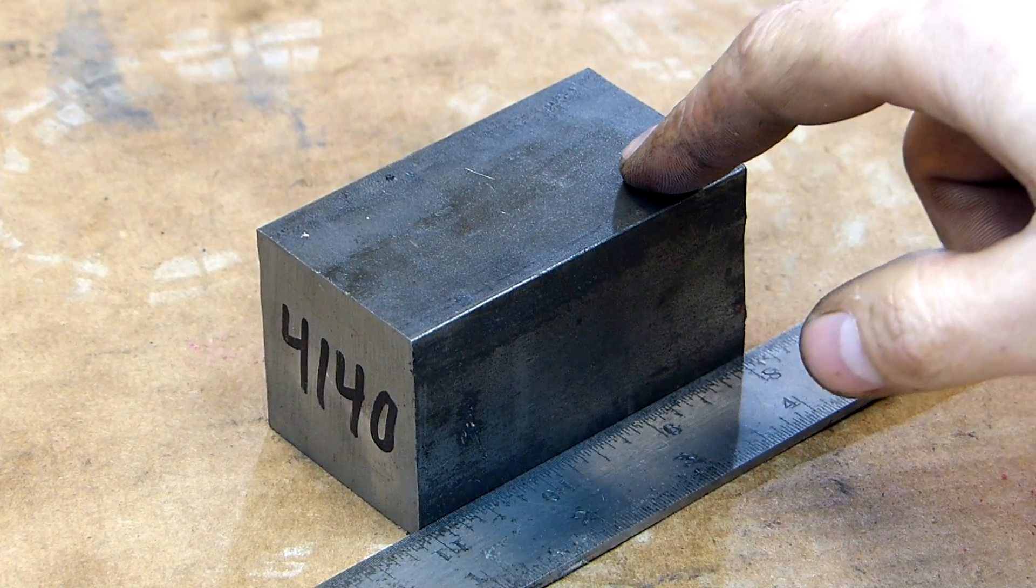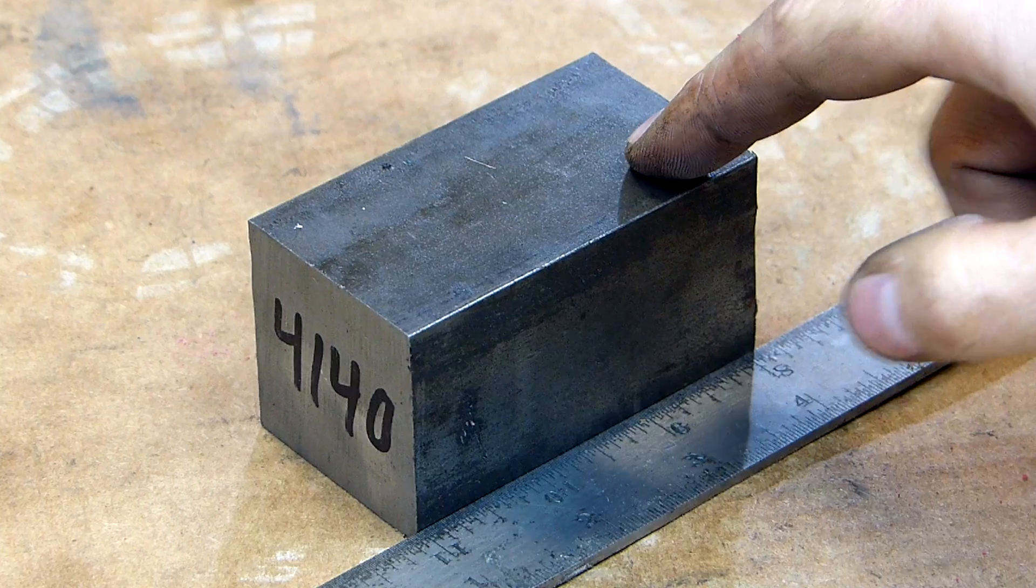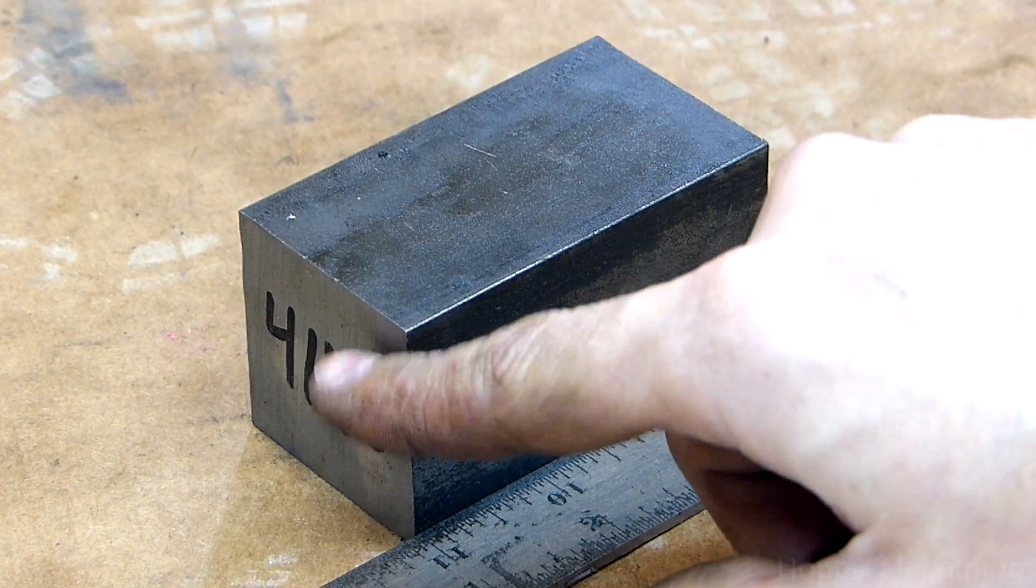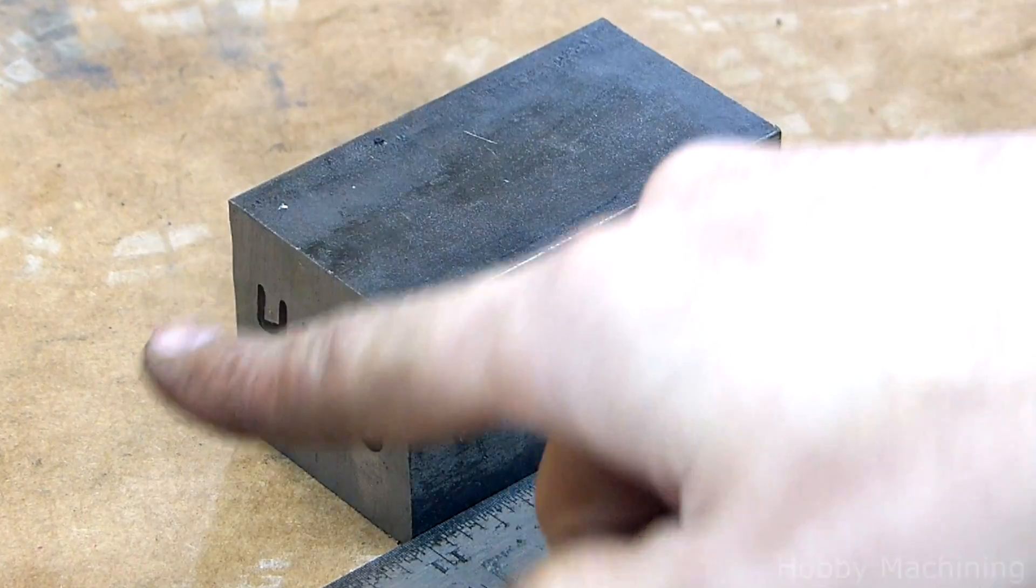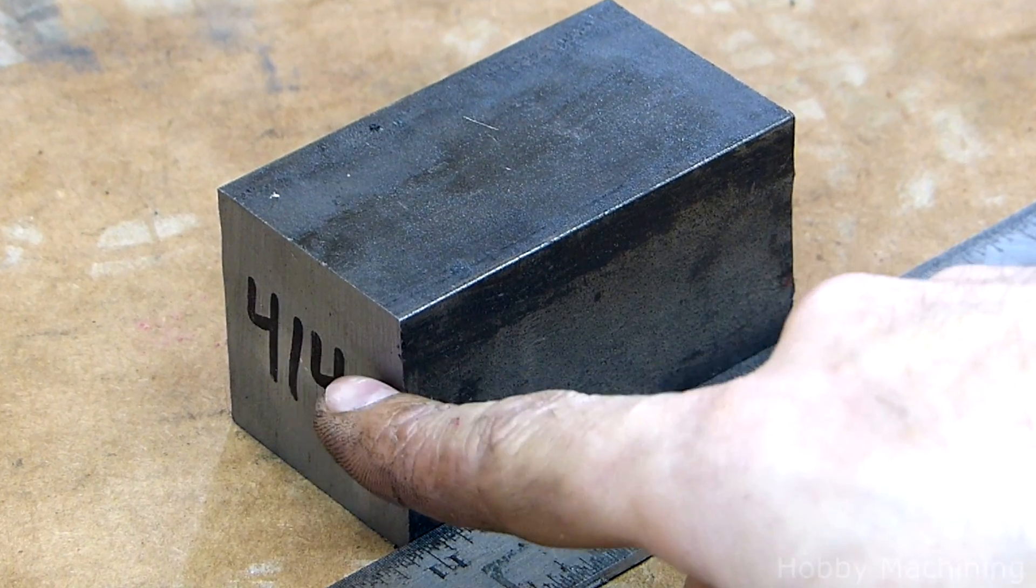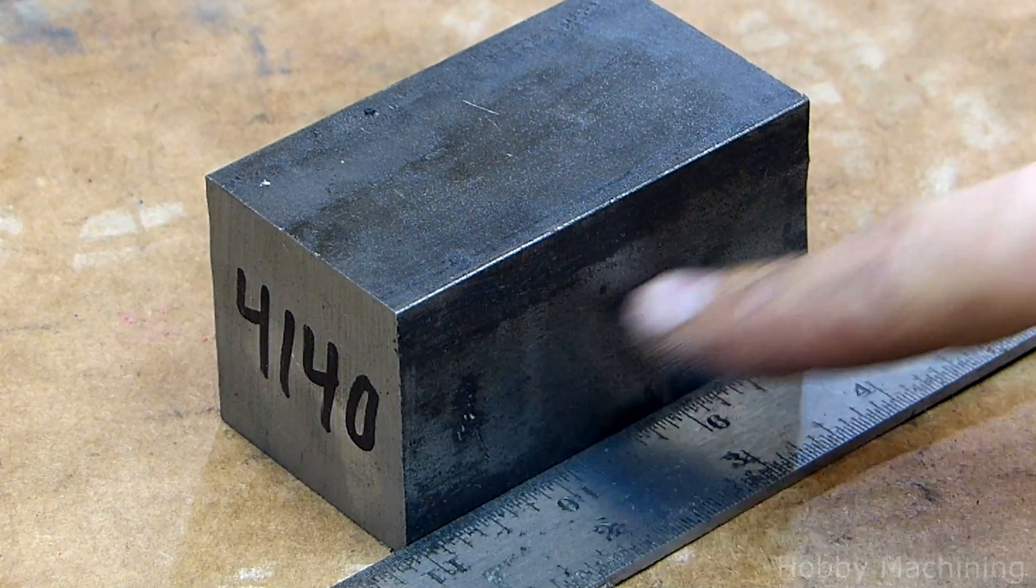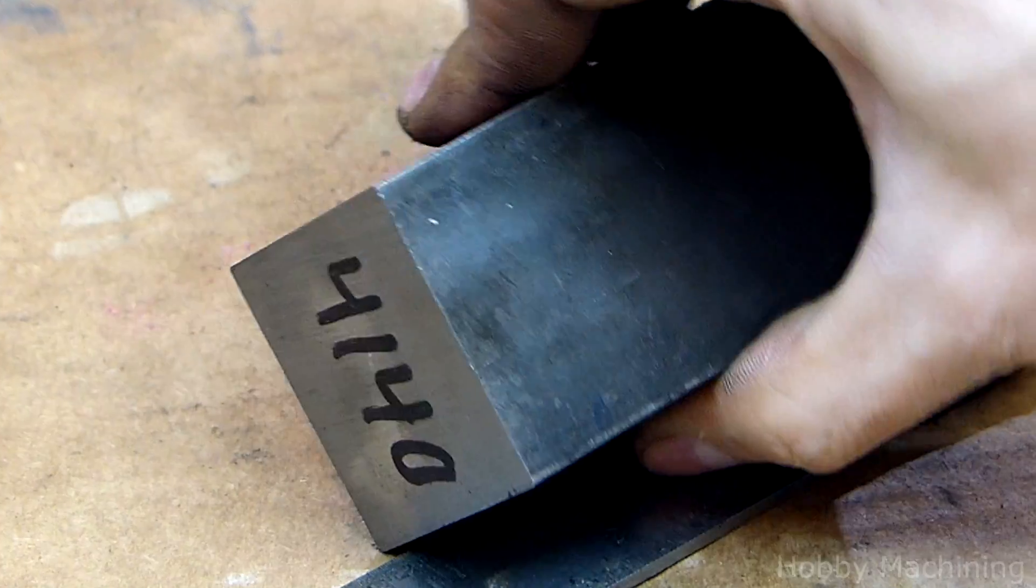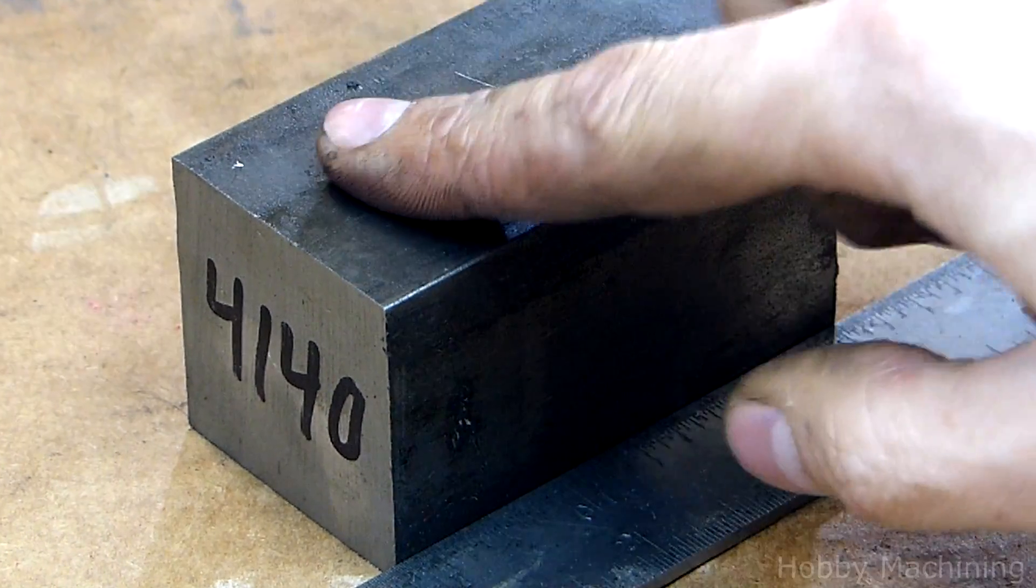I'm going to square up this piece of 4140 in the lathe using the four jaw chuck. This was cut with a saw so these two ends are a little rough and probably not perfectly square. And these are the rough exterior sides. I'm going to take a little bit off of those too.